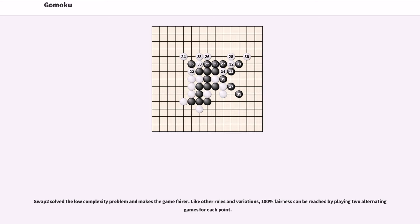Swap 2 solved the low-complexity problem and makes the game fairer. Like other rules and variations, 100% fairness can be reached by playing two alternating games for each point.